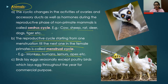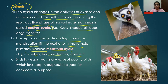When a similar cycle occurs in non-primate mammals like cows, sheep, rats, deer, dogs, and tigers, it is called the estrous cycle — cyclic changes in the activities of ovaries, accessory ducts, and hormones during the reproductive phase. So in female primates, the menstrual cycle occurs, and in non-primate mammals, the estrous cycle occurs. The beginning of these estrous or menstrual cycles marks the beginning of the reproductive phase.